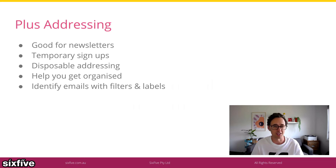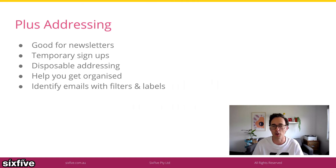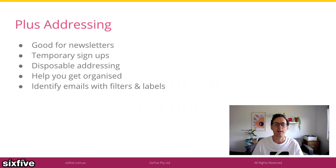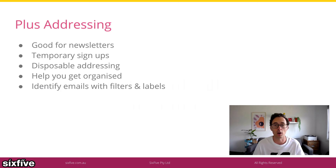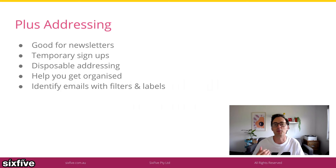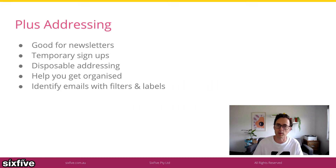Temporary signups — things that you're not sure about yet that you might want to just register for and then discard, because you know that they're going to send you lots of spammy email afterwards. That's a good way of dealing with these kind of things — disposable addresses. You can also use them in combination with labels and filters to very reliably filter them, put labels on them, or do other actions with them as well.